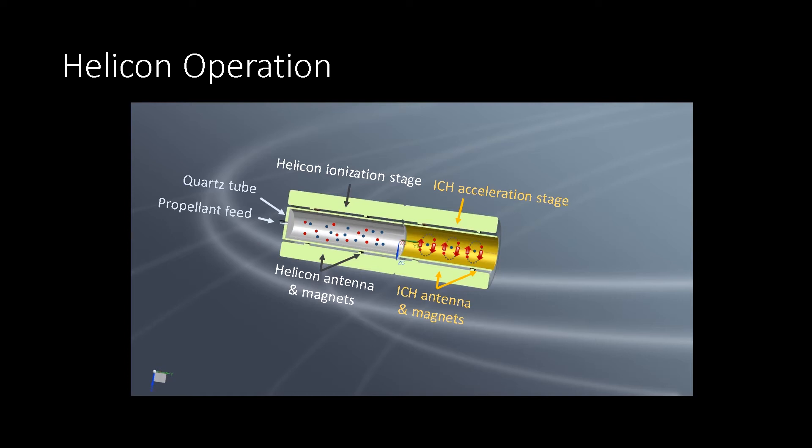We're interested in using ion cyclotron heating to resonantly heat the ions. In the two-stage system, the energy deposited in the second stage is converted into directed kinetic energy in the exhaust beam.